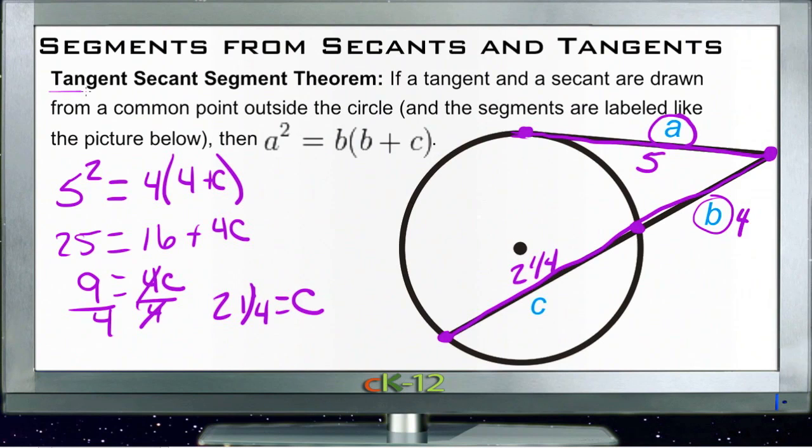Just recognize that the only difference, really, between this theorem and the previous one is the fact that since we don't have two segments on our tangent line, we just take the one segment we have and we square it instead of multiplying it by the other two pieces added together. Let's take a look at the example questions.